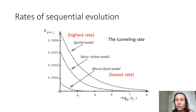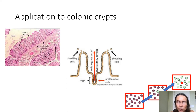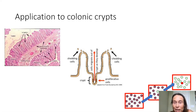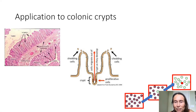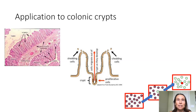Here we apply this to the colon. Colonic tissue consists of folds called crypts. A crypt is a fold of cells, and at the bottom there are stem cells — the most important compartment for us. That bottom compartment is where things take place: cells divide and die, they replace each other, and mutations happen. This is where colon cancer originates.